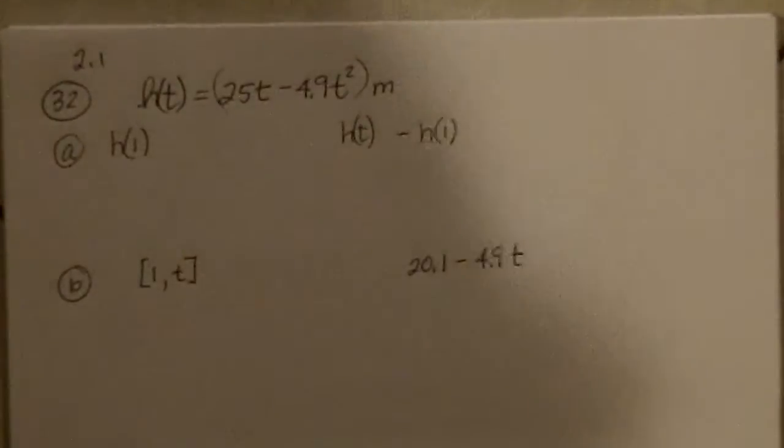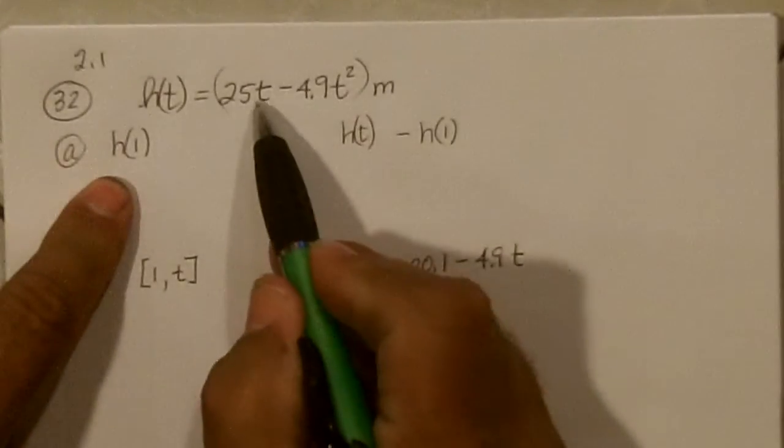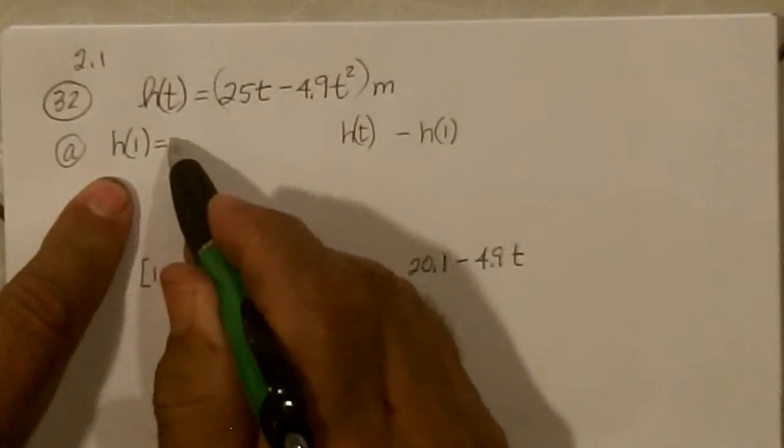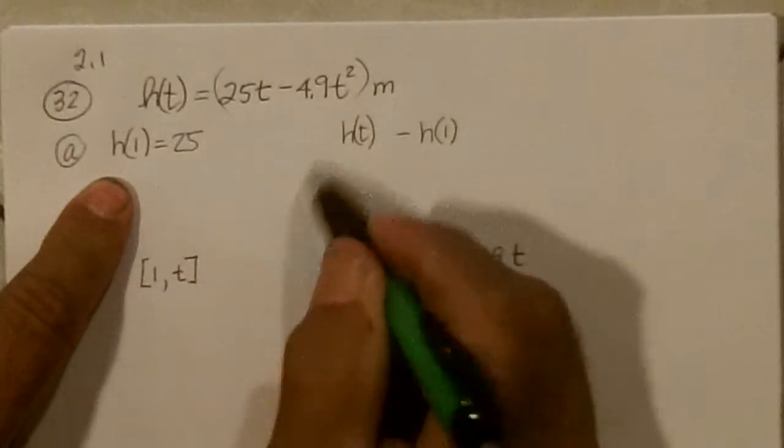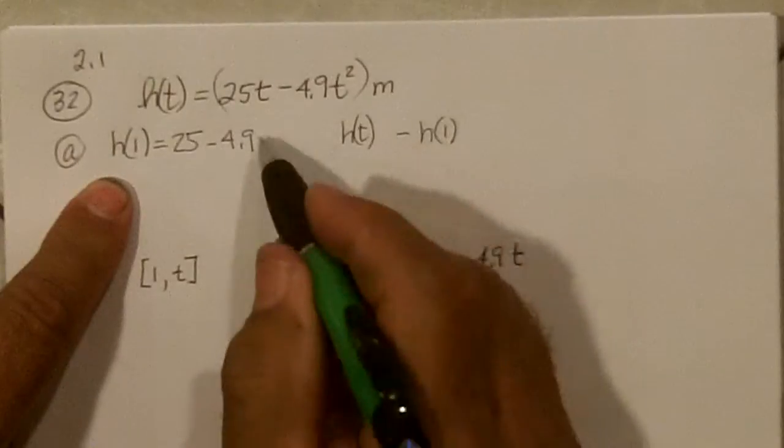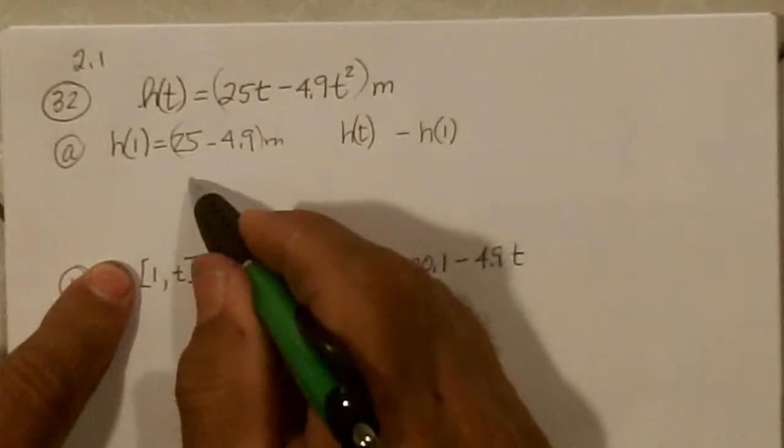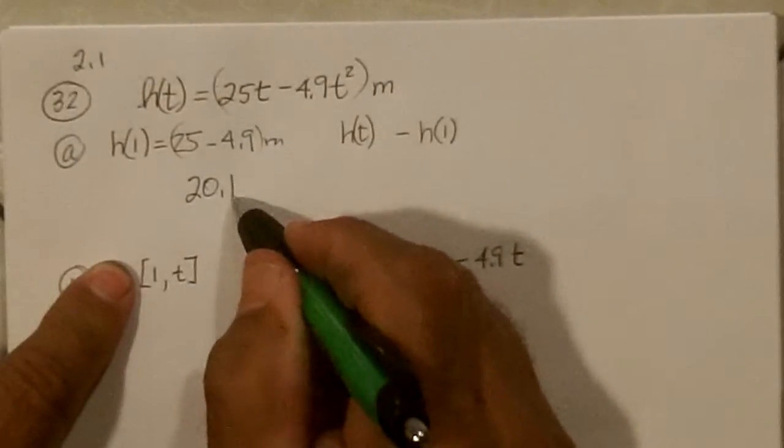All right, let's do 32 on 2.1. So part A says find h of 1. If we plug 1 in there, we're going to get 25 minus 4.9, and the m's for meters. So we get 20.1.